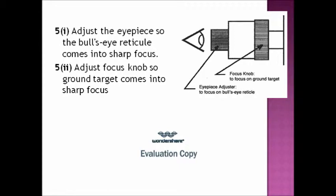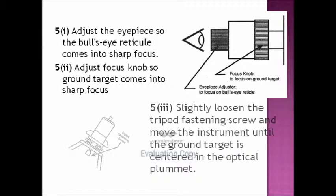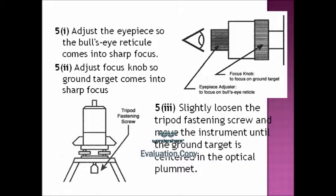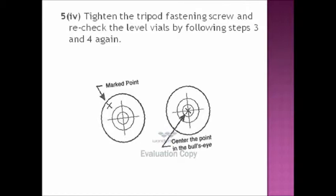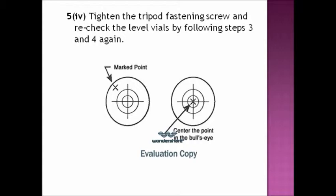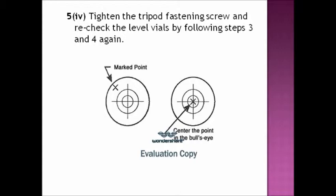Fifth, we adjust the eyepiece so the bull's eye reticule comes into sharp focus. We slightly loosen the tripod fastening screw and move the instrument until the ground target is centered in the optical plummet. We tighten the tripod fastening screw and recheck the level vials by following steps 3 and 4 again.